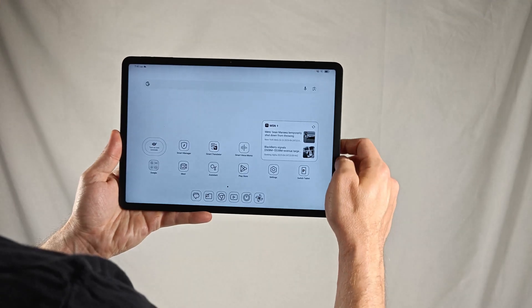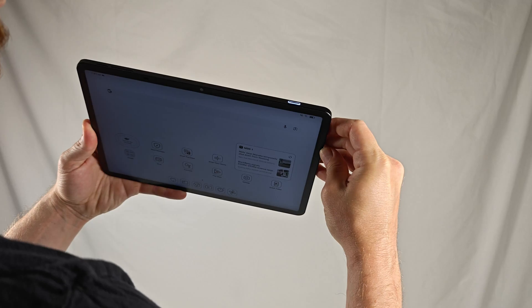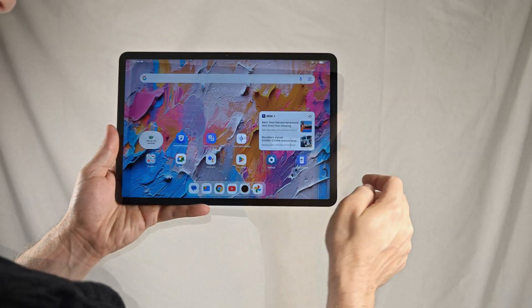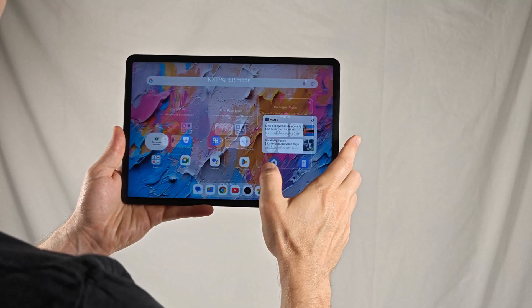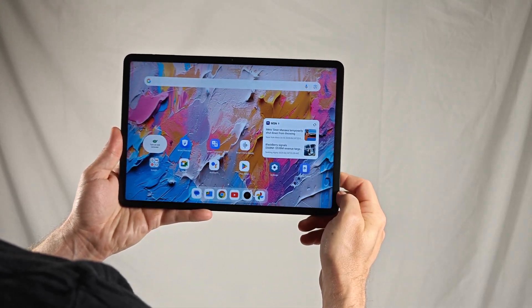To switch between modes quickly, you can use the NXT paper key up top. It's one of the coolest things about TCL's newest NXT paper devices, and you can even disable the key entirely if you don't want to use the other color modes.